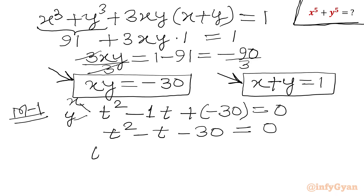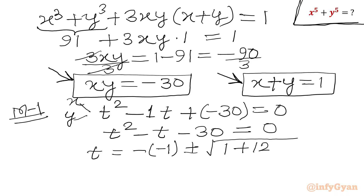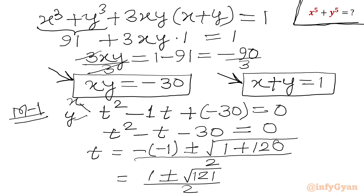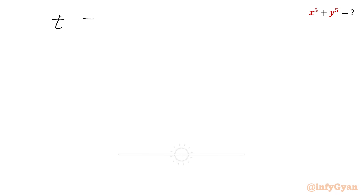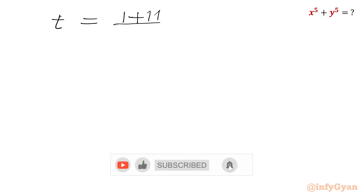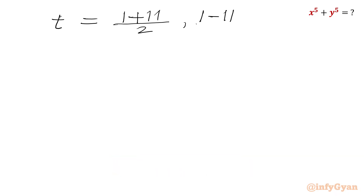Applying the quadratic formula: t = [1 ± √(1 + 120)] / 2 = [1 ± √121] / 2. Since √121 = 11, we get t = (1 + 11)/2 = 12/2 = 6, or t = (1 − 11)/2 = −10/2 = −5.